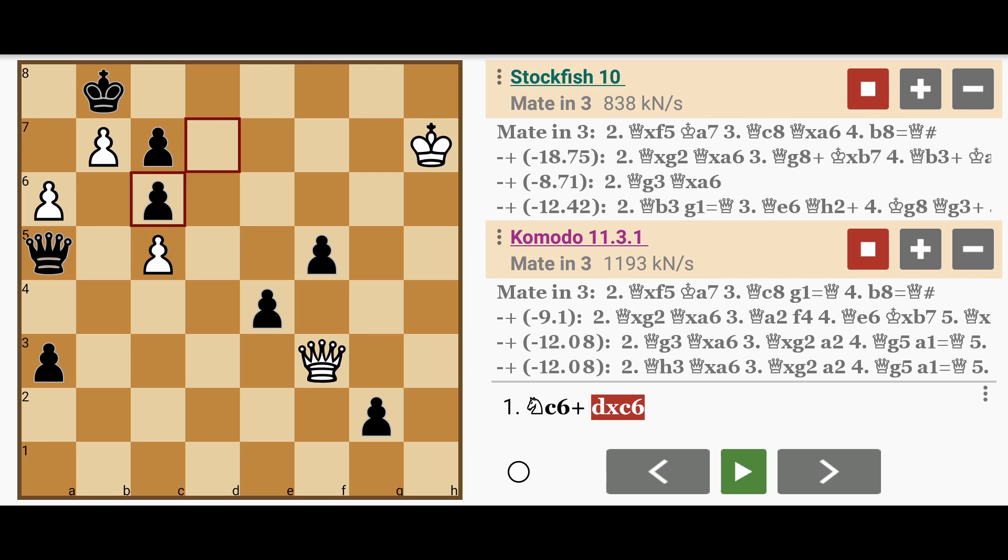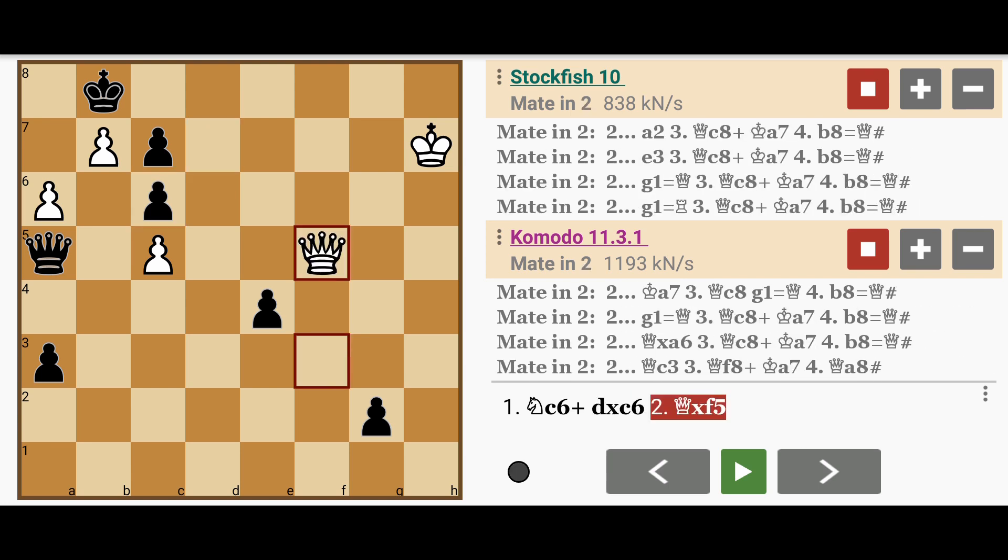Then White plays queen captures f5, and the logic becomes clear. The path to c8 needed to be cleared in order for this checkmate to work.